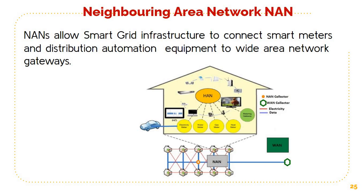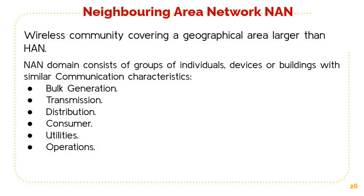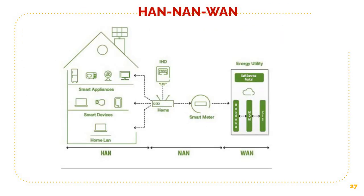Moving on to the Neighboring Area Network, or NAN. NAN is basically used to collect information from smart meters. It allows smart grid infrastructure to connect smart meters and distribution automation equipment to wide area gateways. It is a wireless community covering a geographical area larger than HAN, and consists of groups of individuals, devices, or buildings with similar communication characteristics — for example, bulk generation, transmission, distribution, consumer, utilities, or operations. The geographical boundaries of HAN, NAN, WAN, etc., are shown here.